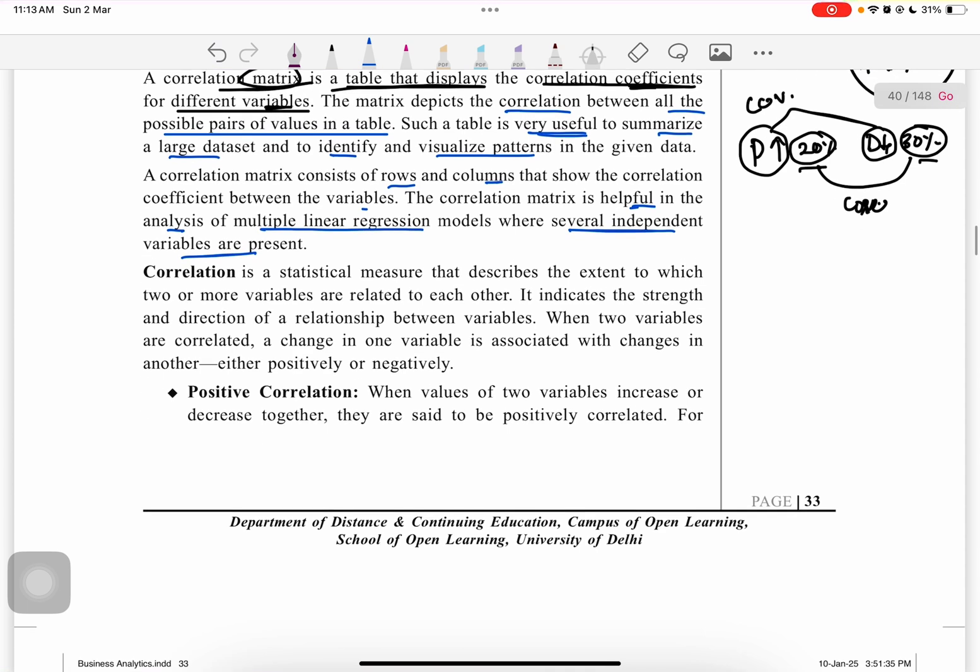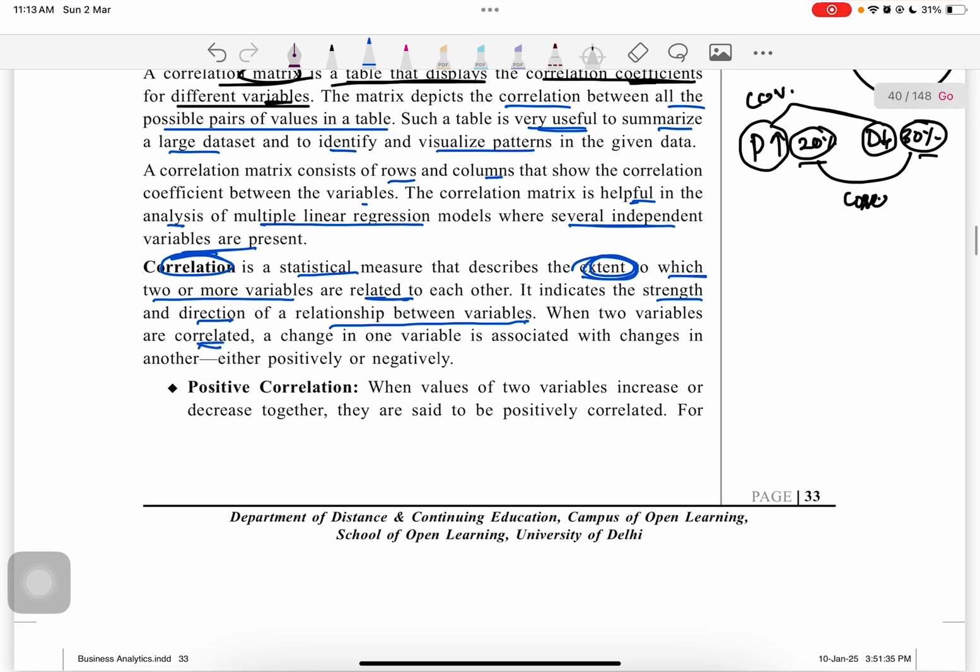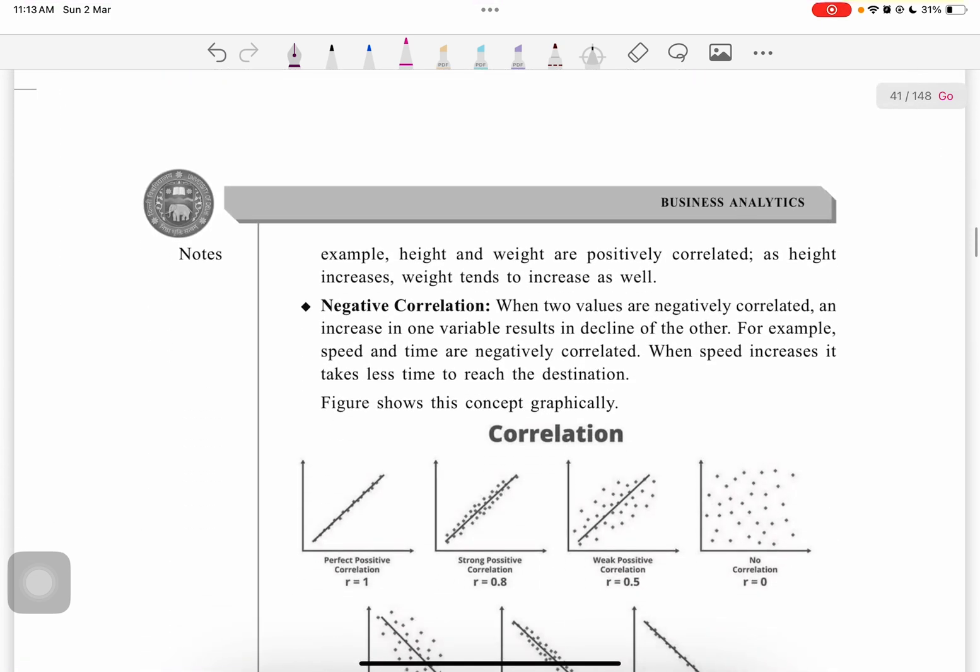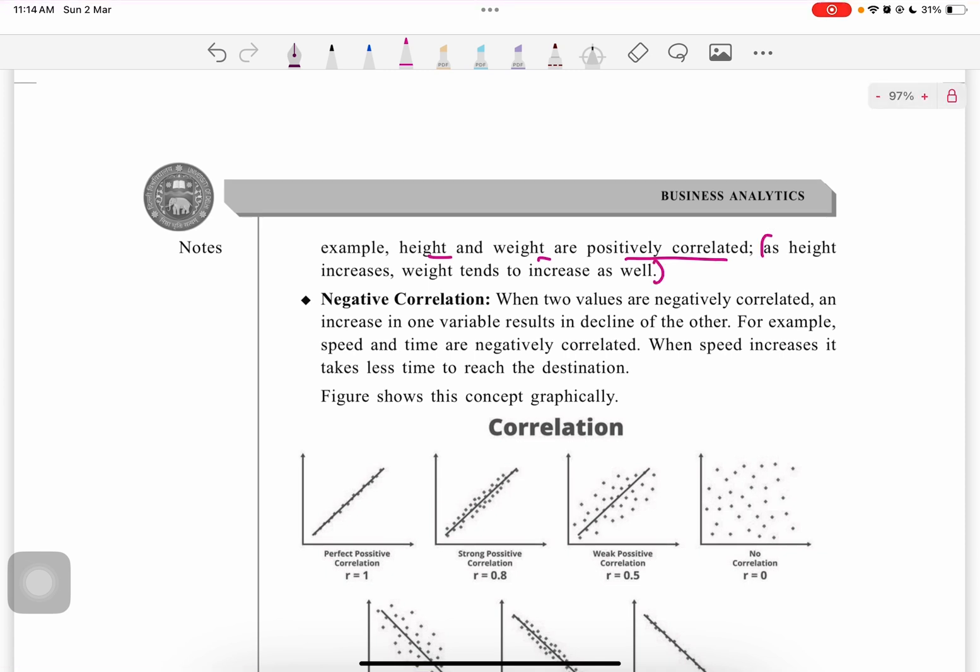Correlation is a statistical measure that describes the extent or strength to which two or more variables are related to each other. It indicates the strength or direction of the relationship between the variables. Positive correlation means the values of two variables increase or decrease together simultaneously. For example, height and weight are positively correlated—as height increases, weight tends to increase as well.